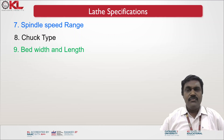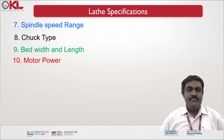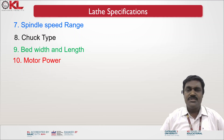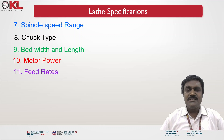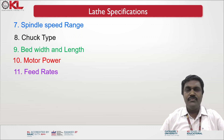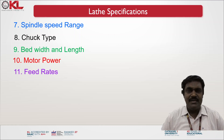Then width and length of the bed — the bed size in terms of width and length can also be mentioned. Then motor power — the horsepower of the motor required to run your lathe machine can also be specified. Then feed rates — what feed rates you are expecting from the lathe machine, that is the feed per revolution — how much the tool will move for each revolution.